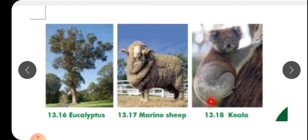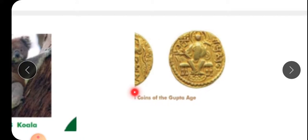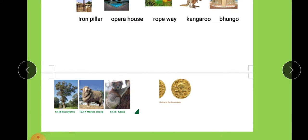And this animal is called koala. In this picture, this is the coins of Gupta age. Yeh jo Gupta age hai unke coins. And the coins of Gupta age. So now you have to tell me the answer children.